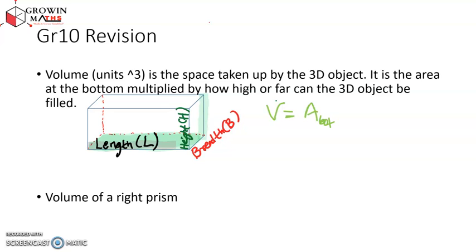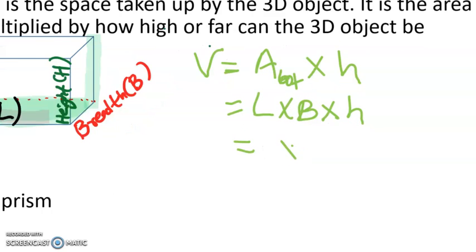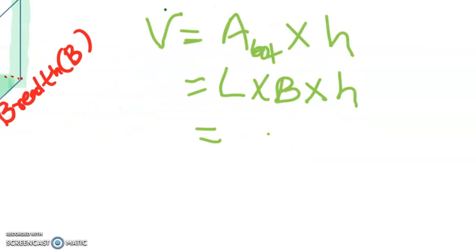Volume equals the area of the bottom surface multiplied by the height. The bottom surface is a rectangle, so its area is length times breadth. Multiply that by how high it will be filled — the height. Therefore, the volume of a rectangular prism is L times B times H, written as LBH.